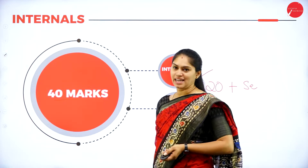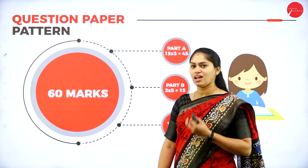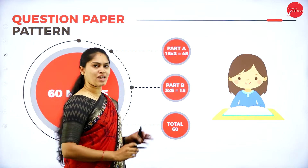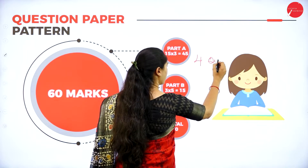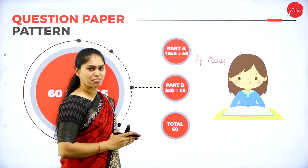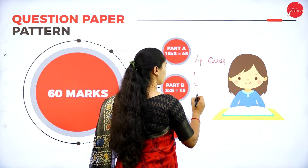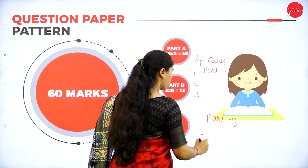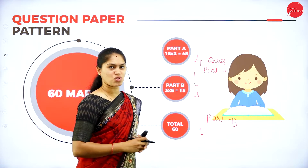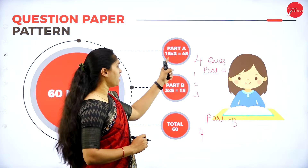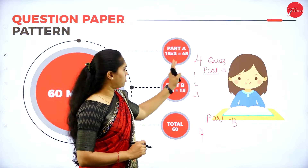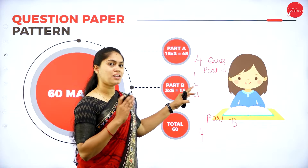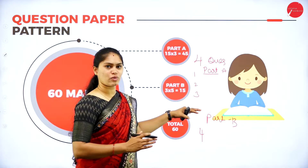For the external examination, there are 60 marks and only four questions in the question paper. Questions 1, 2, and 3 are Part A, and Question 4 is Part B. In Part A, each question carries 15 marks, so 15 into 3 gives 45 marks. All three questions are mandatory. Each question has two sub-questions, A or B, and you must answer either sub-question A completely or sub-question B completely — you cannot mix one from A and one from B. The marks split within each question can be 9+6, 10+5, or 8+7.